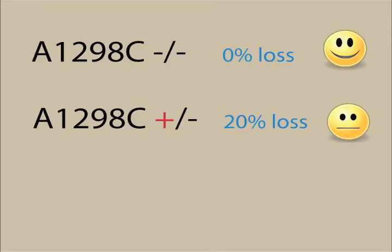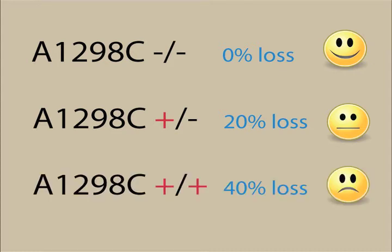If you have one mutated copy, it's written as A1298C plus minus. This results in a 20% loss of function. Two mutated copies, A1298C plus plus, results in a 40% loss of function.